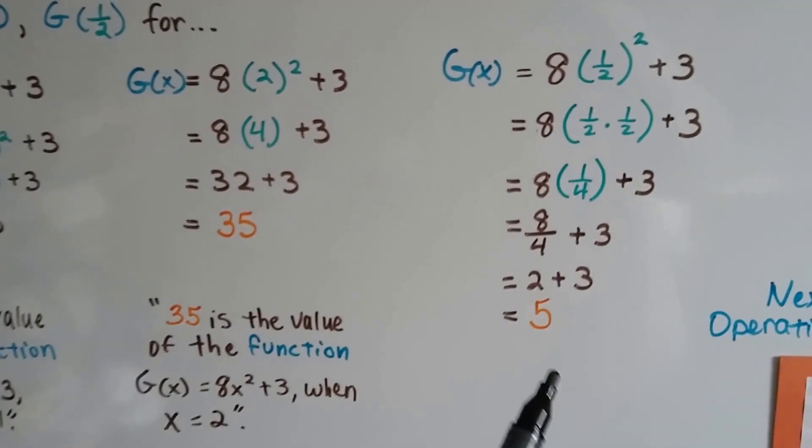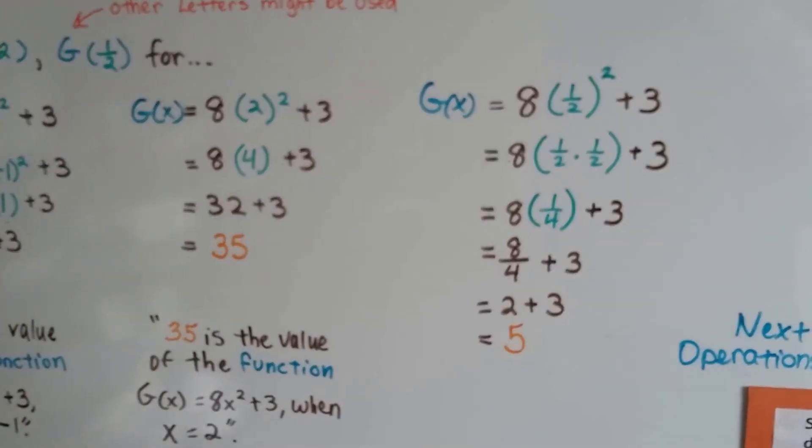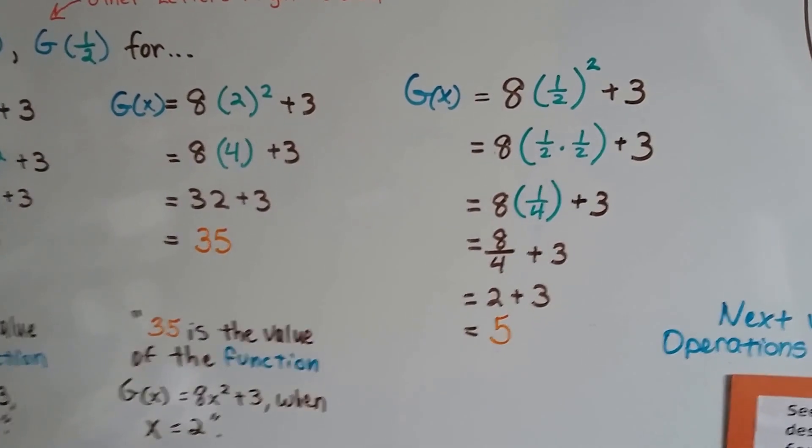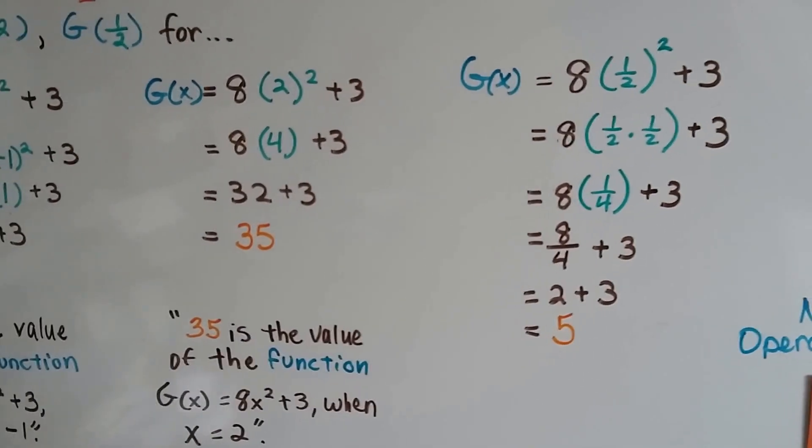For this one, we plug in the half, and a half times a half is a fourth, that makes 8 fourths, that makes 2, and 2 plus 3 is 5.